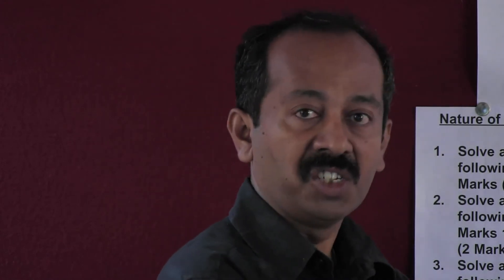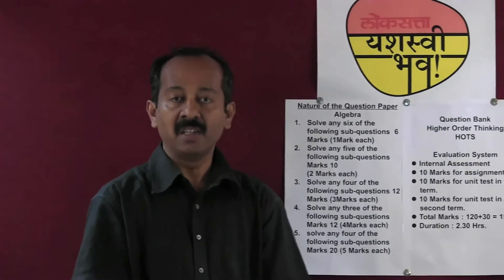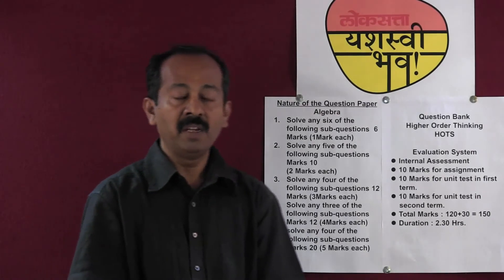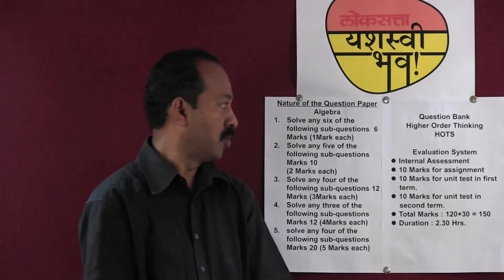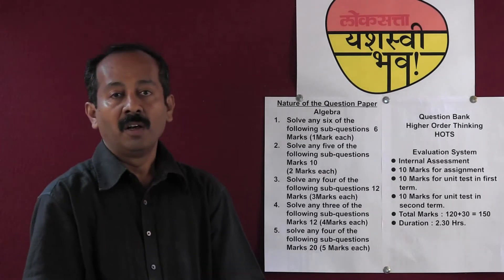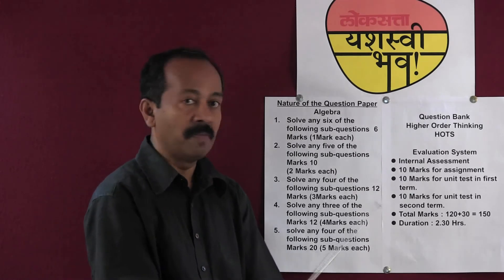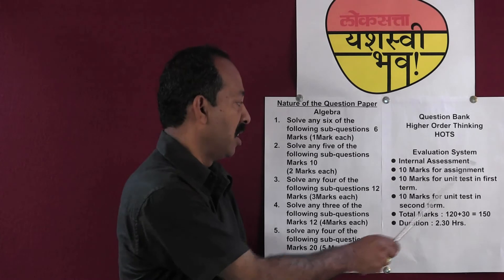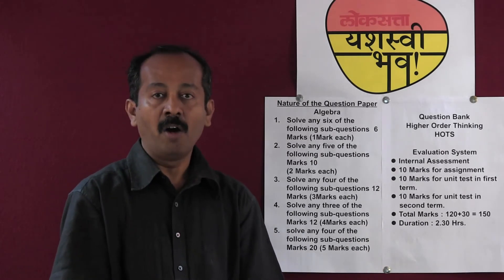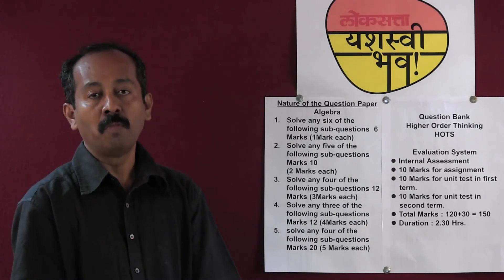Now let us see the evaluation system. From the year 2011 and 2012, the evaluation system is changed for algebra and geometry. There will be a board exam of 60 marks each for algebra and geometry, and there will be an internal assessment of 30 marks for algebra and geometry combined. The internal assessment includes 10 marks for assignment — one assignment each from algebra and geometry will be given, and marks scored out of 100 will be converted into marks out of 10. There will also be 10 marks for the unit test in the first term, where a unit exam of 30 marks each in algebra and geometry will be conducted and marks scored out of 60 will be converted into marks out of 10.